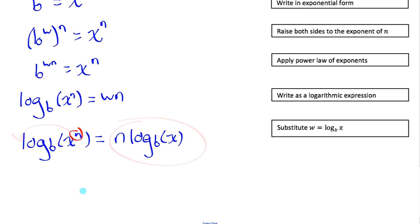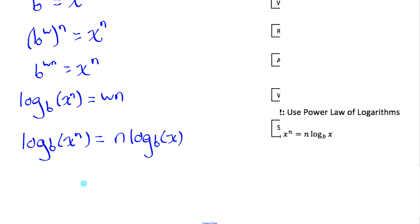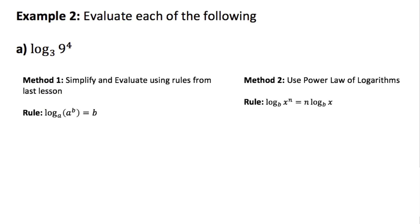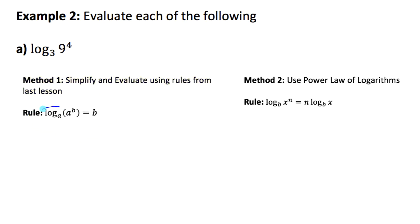Let me show how we can use that rule. Example two: evaluate each of the following without a calculator. Method one says simplify and evaluate using rules from last lesson. Hopefully you recognize this rule — a logarithmic expression when evaluated tells you what exponent goes on the base to get the argument. So an exponent of b on a gives a to the b, which is why that answer is just b.